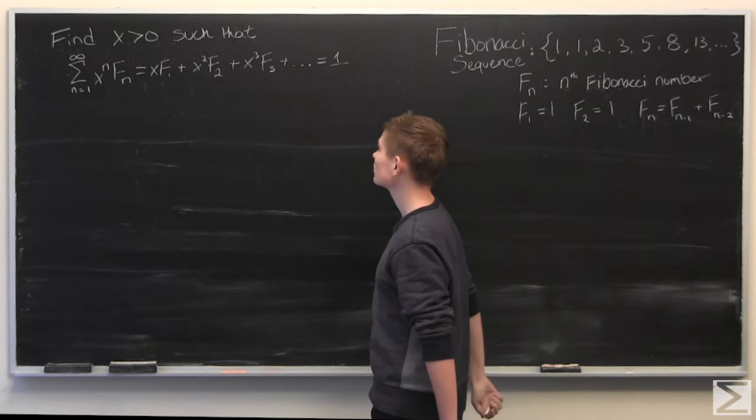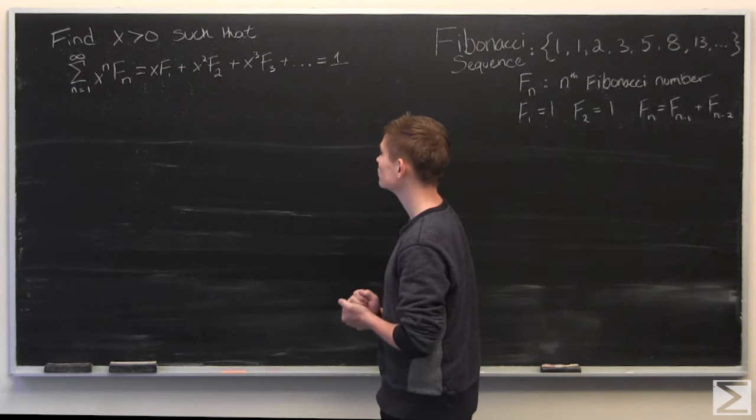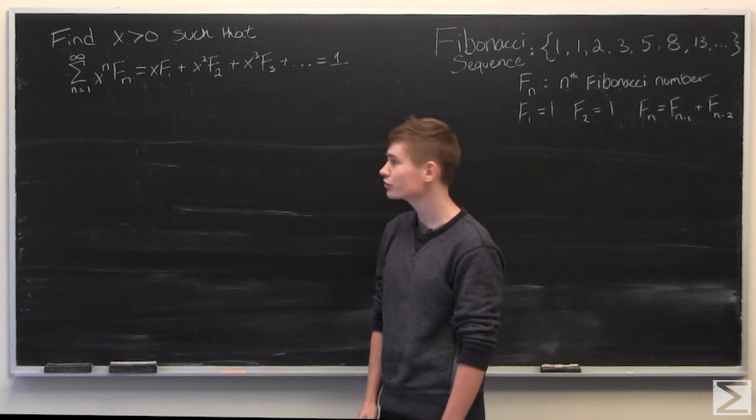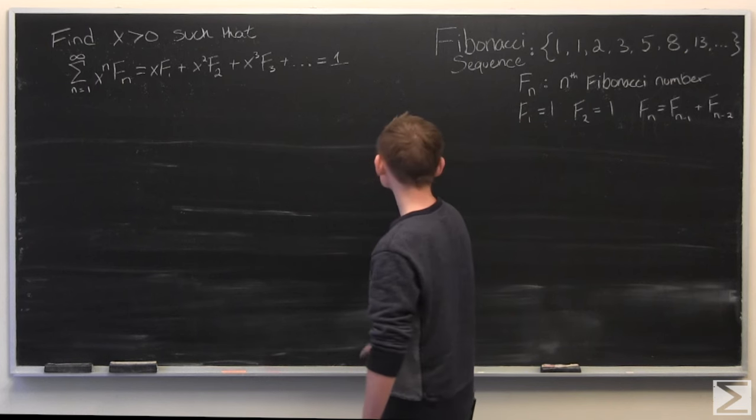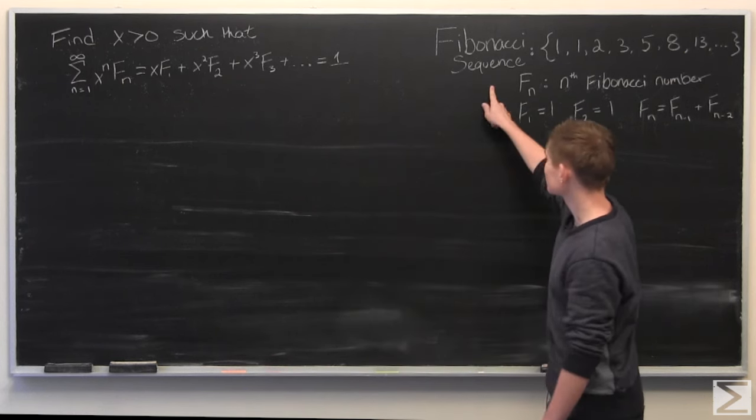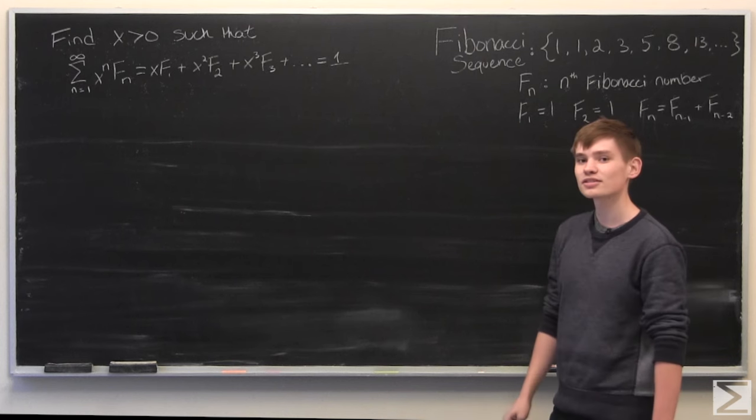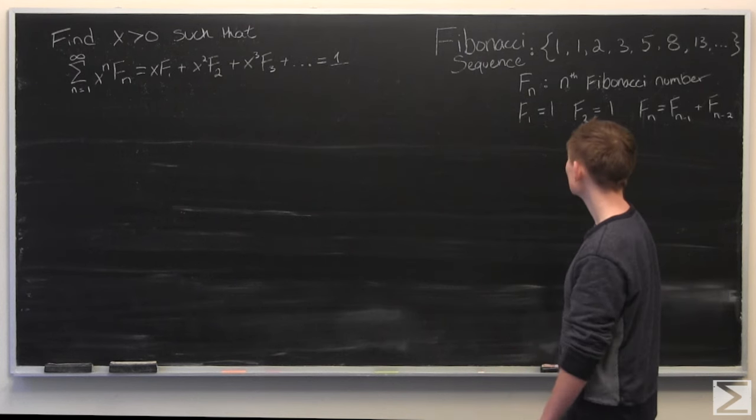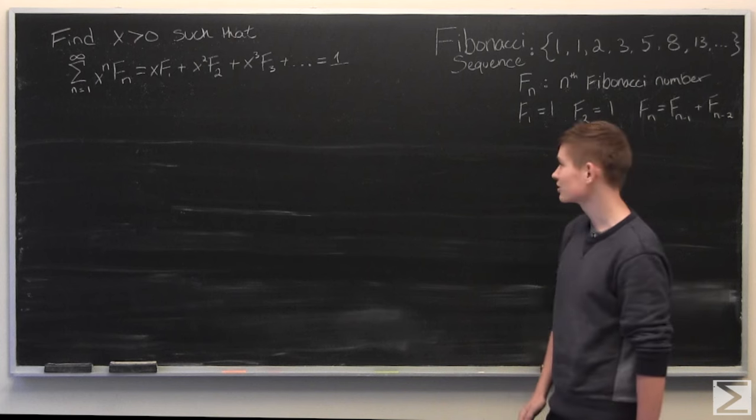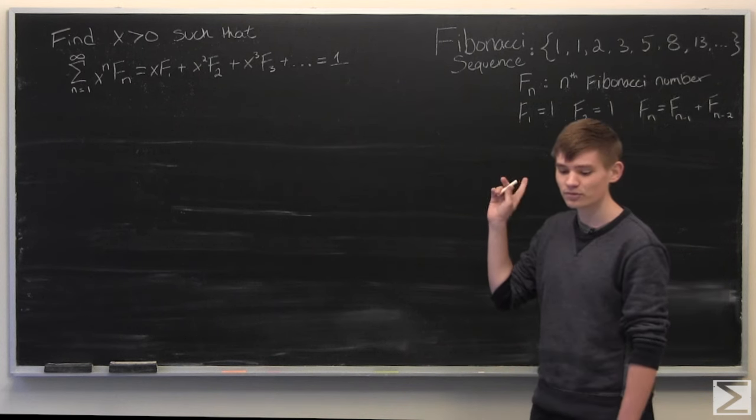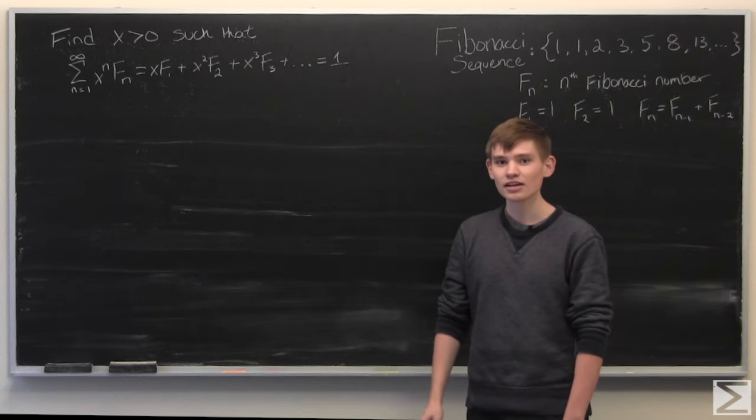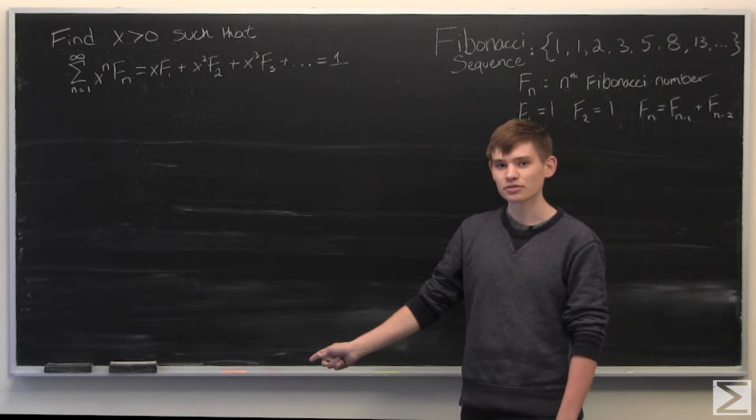And so, to start this off, we should look at what an expected value of x should be. So, looking at the Fibonacci sequence, the Fibonacci sequence is an increasing unbounded sequence, meaning that as this Fibonacci sequence progresses, the numbers tend towards infinity.